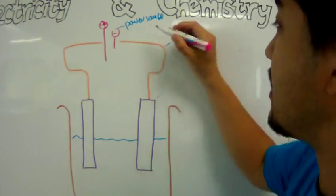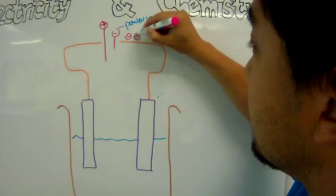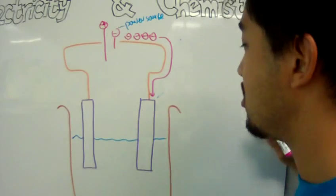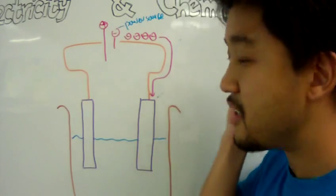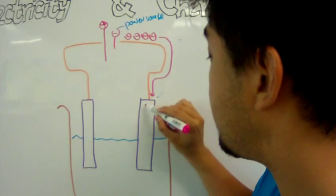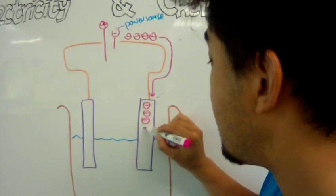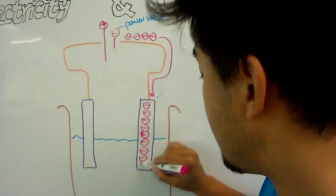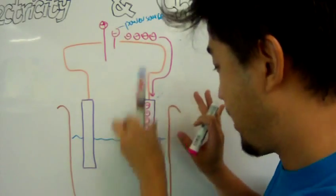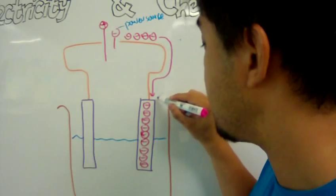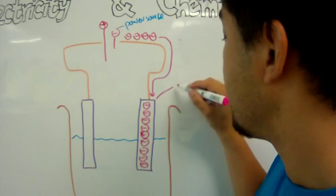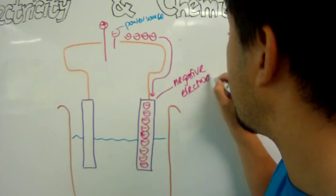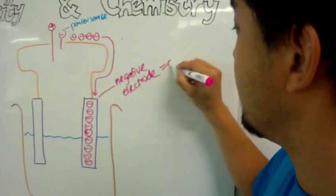When you turn on the power source, electrons are going to start shooting into the wire and travel downwards into the electrode. This electrode will now become a negatively charged electrode, so you get a lot of electrons packed into the electrode. This will become a negative electrode, also called the cathode.